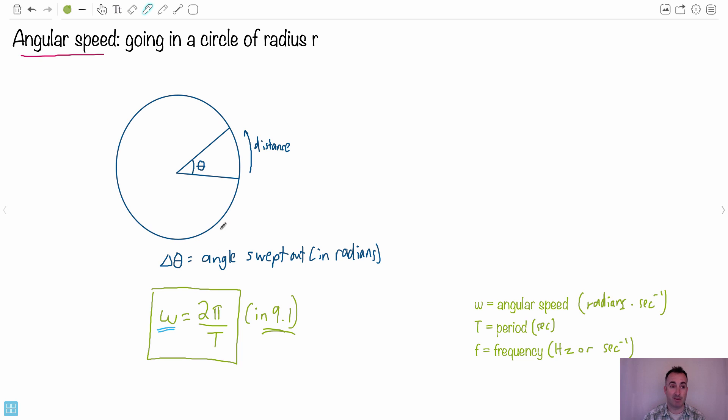This equation doesn't really show up in this topic but it does show up in a different topic. So that's just why I've put it there. This is omega here, this is the angular speed, and again it's in radians per second.